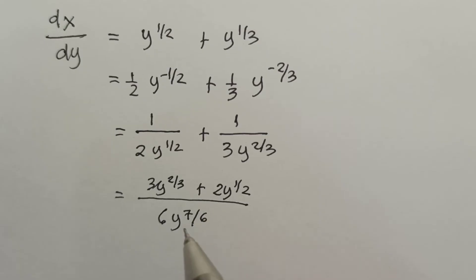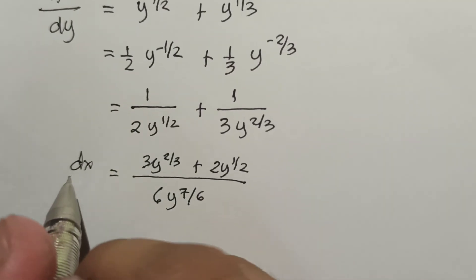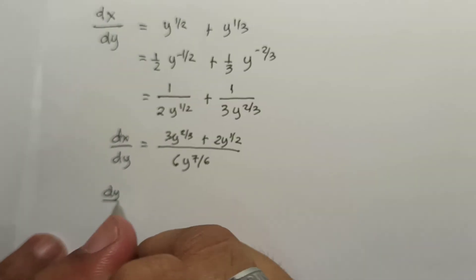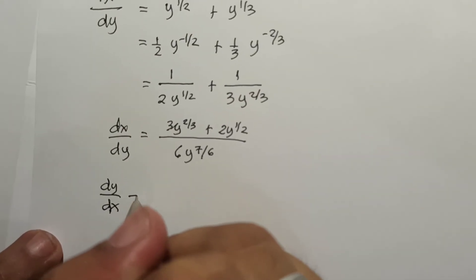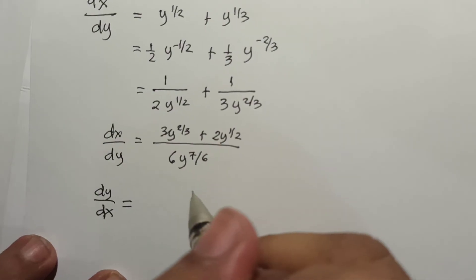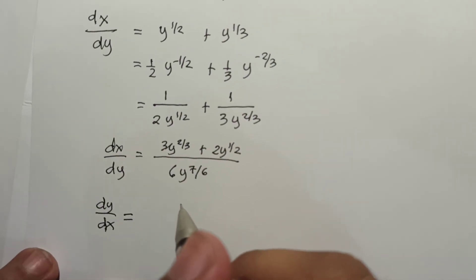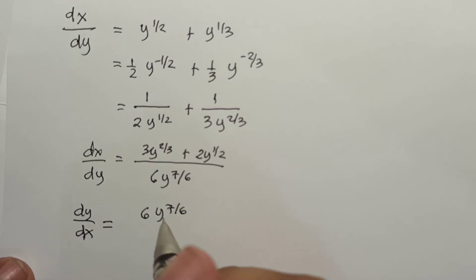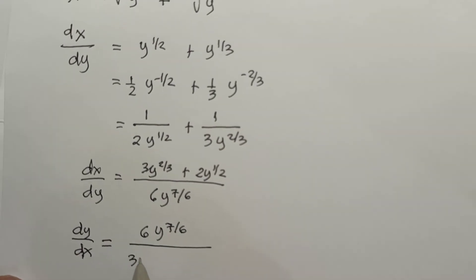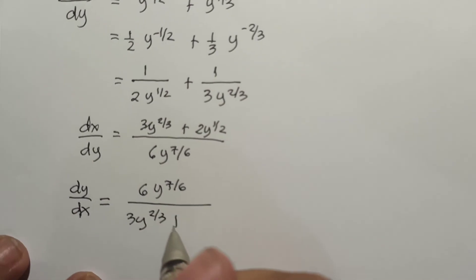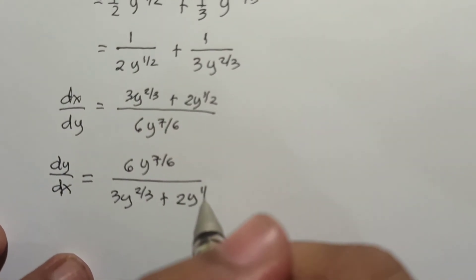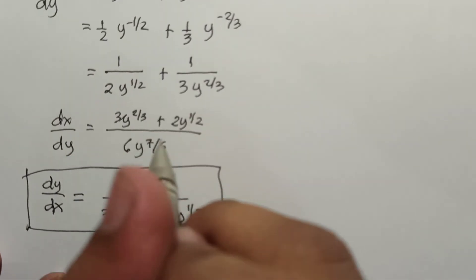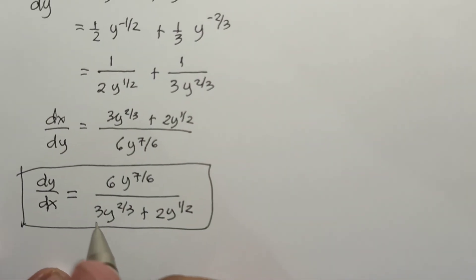Since we need dy/dx, we take the inverse of dx/dy. Therefore dy/dx = 6y^(7/6) / (3y^(2/3) + 2y^(1/2)). That is the inverse rule applied.